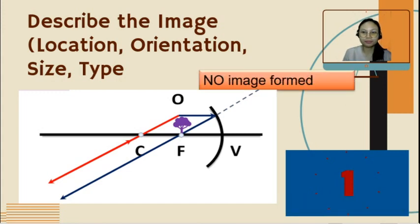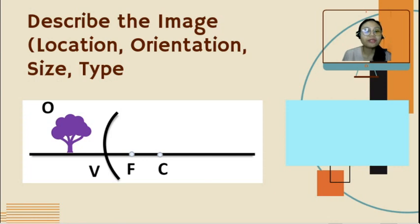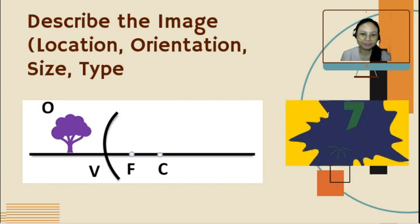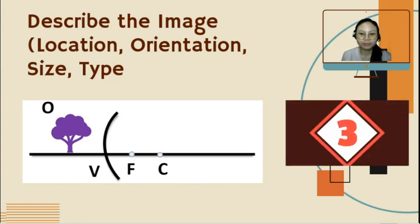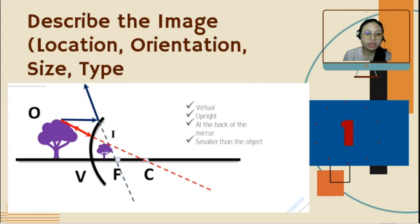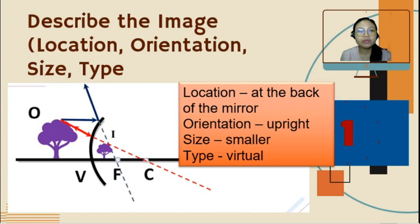Last picture: what if the object is in front of a convex mirror? The first two pictures used a concave mirror. The image is between F and V, or at the back of the mirror. The orientation is upright, the size is smaller, and the type of image is virtual — because the orientation is upright, it is always virtual.